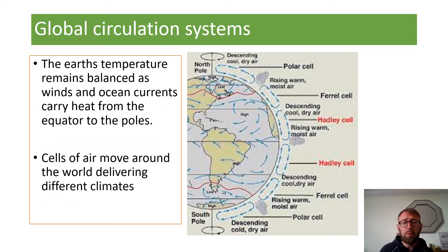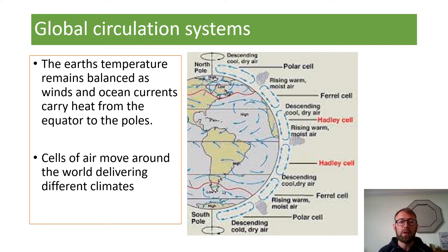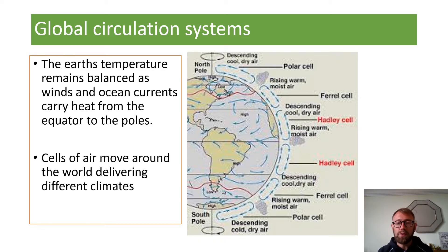First up is the global circulation system. This is something that seems to confuse quite a few students, and we see it at a couple of points. We mention it a little in climate change but also in ecosystems. It's something you need to be familiar with because it has a big impact on global hazards and sustaining ecosystems. On screen you can see the different cells: the Hadley cell, the Ferrel cell, and the Polar cell.